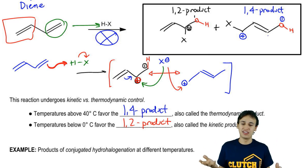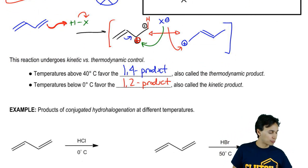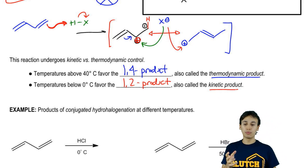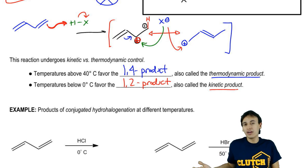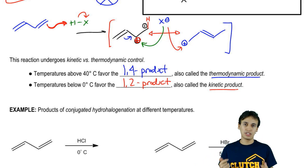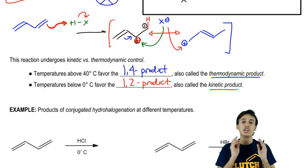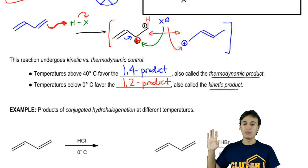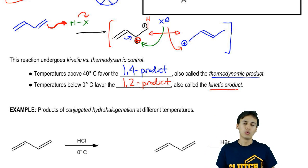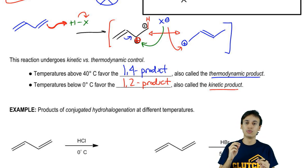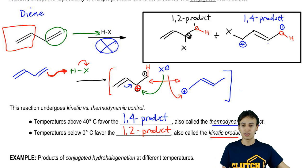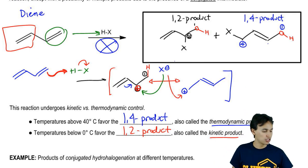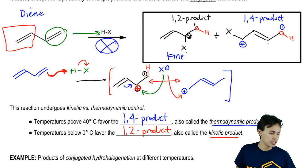The 1,4 product is called the thermodynamic product, and the 1,2 product is called the kinetic product. This introduces the concept of thermodynamic versus kinetic control, which is important in organic chemistry and appears in other reactions too. I'll cover the full explanation of thermodynamic versus kinetic control in a separate set of videos — for now, focus on memorizing which product corresponds to which temperature and which label.